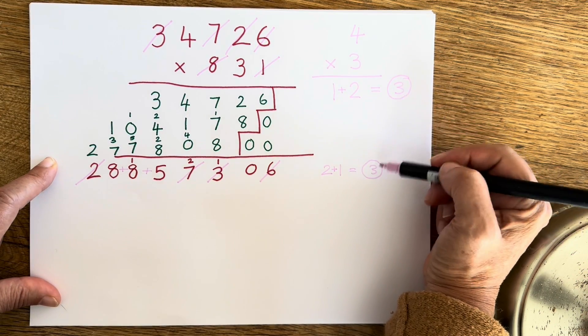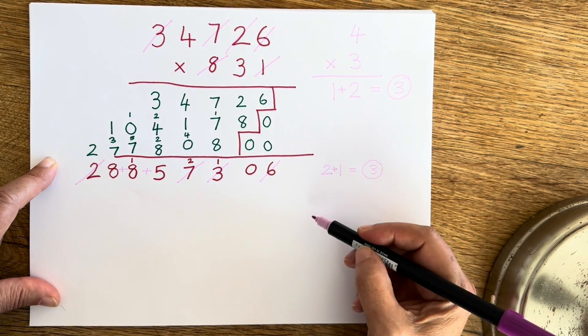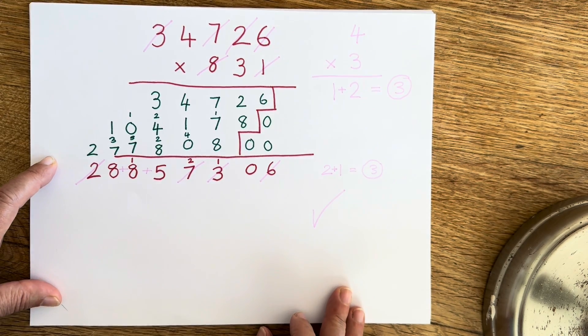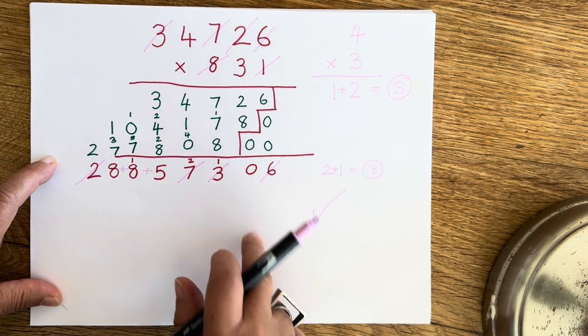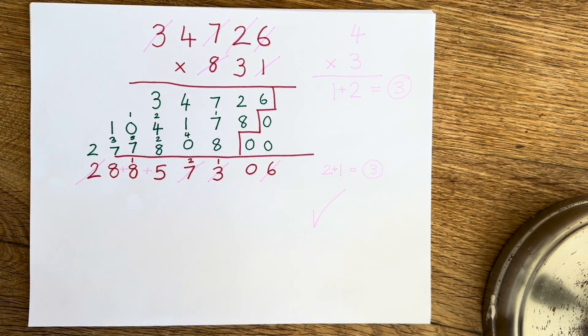And because these two are the same, we know that we've solved this problem correctly. And that's how you cast out nines once you've done your multiplication to check you have the right answer.